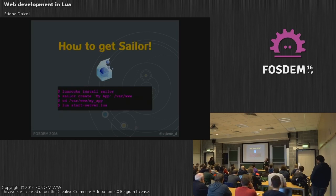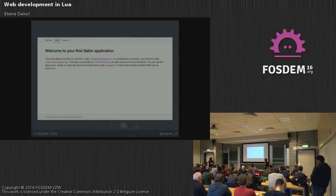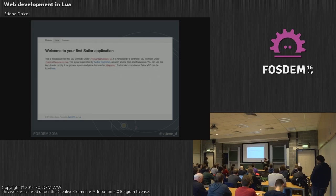How do you get Sailor? It is pretty straightforward. You get it from the LuaRocks package manager — just do `luarocks install sailor`, and then you can create your app, start the server, and it will spit out a pretty app. Sailor comes integrated with Bootstrap, so it is not that ugly out of the box, but of course you don't need to use it.